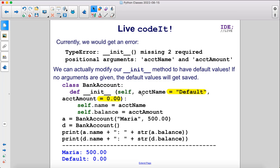So here, instead of just having acctName, we can have equals "Default" and acctAmount equals 0.00. Those become the default values.